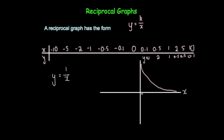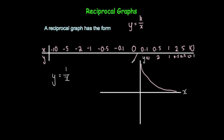And whenever you divide by decimal numbers like 0.1, 0.01 and so on, it'll get very, very large. So again, it'll approach the y-axis. So it'll look something like that. Let's now draw the other side.